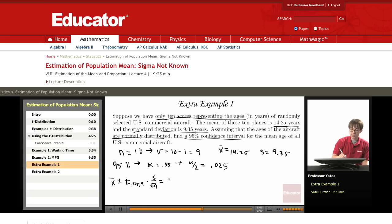So X-bar, we found to be 14.25. I go down to where there's 9 degrees of freedom, then I go across to the column that says 0.025, and you should get for your value of T, 2.262. Then we multiply that by 9.35 over the square root of 10.